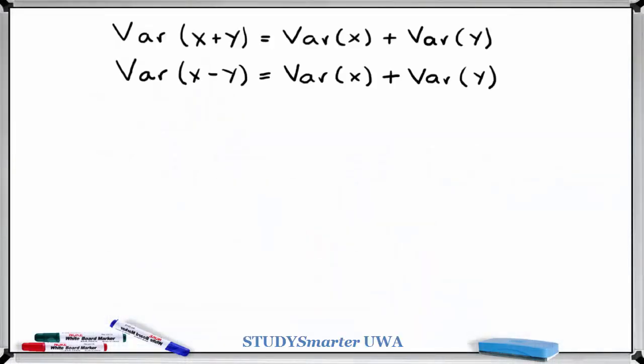Here we have two formulas which relate the variance of a combination of independent random variables x and y to the variances of the individual variables.